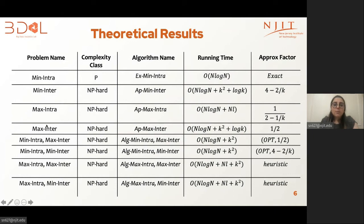Then we studied the combined version of the problems, which is our actual goal of combining the bi-objective intra- and inter- with each other. Surprisingly, we noticed that other than min-intra, all other problem variants are NP-hard. Our investigation shows that minimizing intra-diversity inside the session is a polynomial time problem. Other than that, all other three individual optimization problems are NP-hard. So when the intra- and inter-variants are combined, they all become NP-hard, because inter-problems, irrespective of minimization and maximization, are NP-hard. The third column is the name of the appropriate solution that we proposed. We designed XMinIntra for minimizing the intra optimization and AppMaxIntra for maximizing the intra.